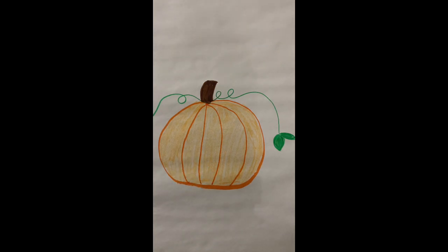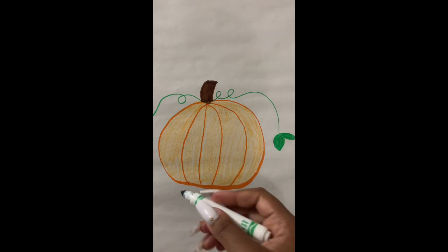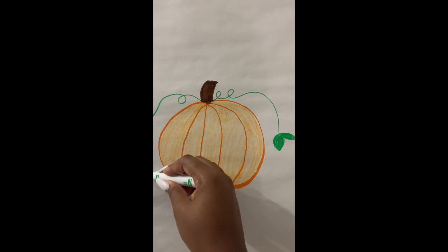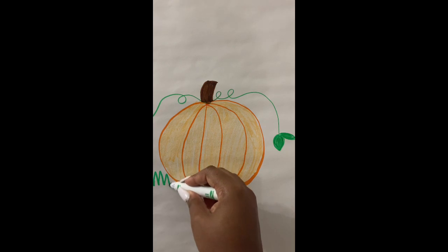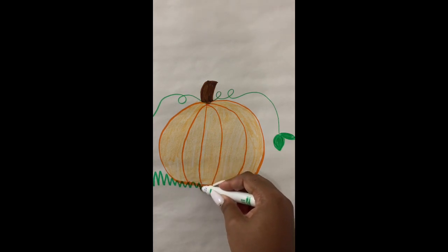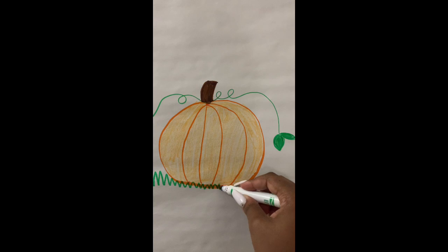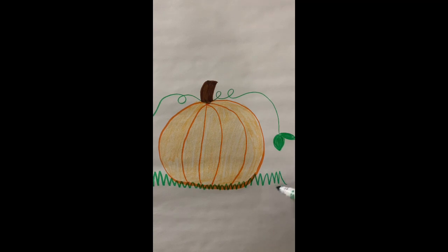Last thing you can add is a little grass or just a bottom for your drawing. I'm going to use a zigzag line which is going up and down, making little triangle-like shapes from one side of the pumpkin to the next. All right, guys.